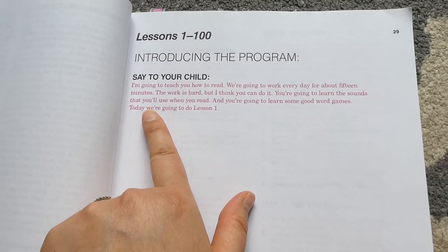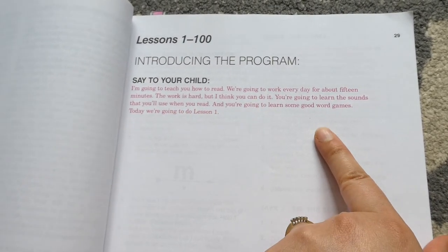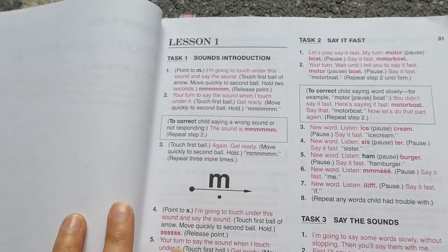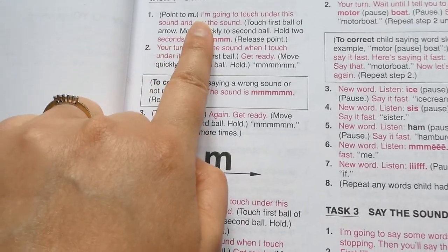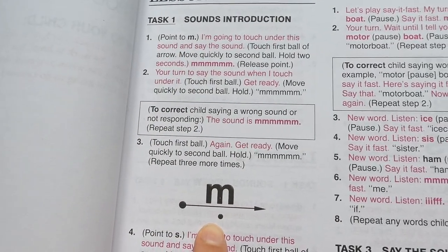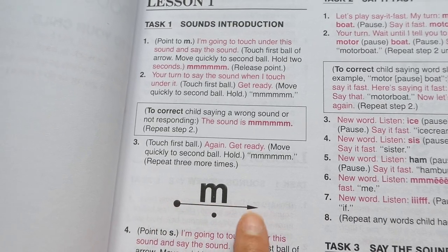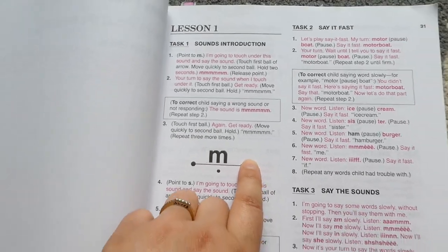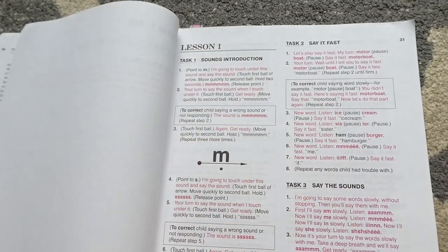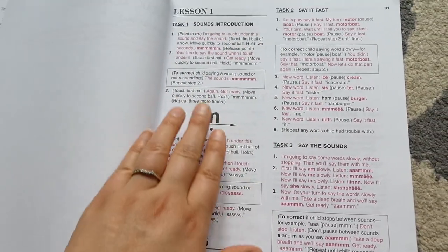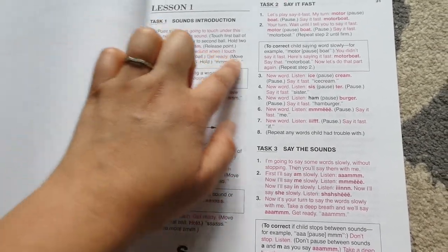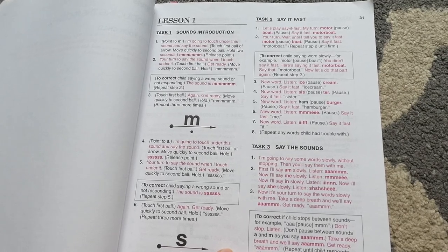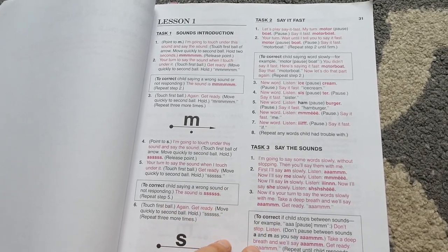So here is how it begins with the script. As you go through the program, anytime you see words in red, those are words that you as the teacher are supposed to say. So here's lesson one, and it'll go through and say, point to M, there's your action. I'm going to touch under this sound and say the sound. And then you say to your child, I want you to say this now. And they're going to make that sound. Most of my kids by five and a half to six, they were reading very fluently.